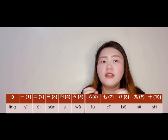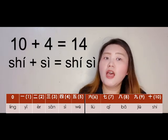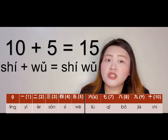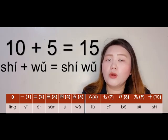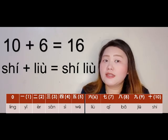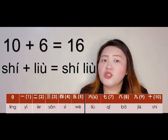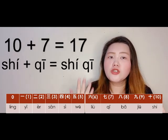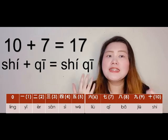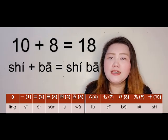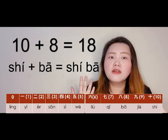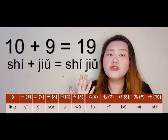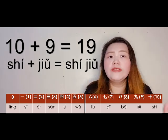Then 10 plus 4 is 14 — 十四 (shísì). Then 15 is 10 plus 5 — 十五 (shíwǔ). Then 16 is 10 plus 6 — 十六 (shíliù). Then 10 plus 7 is 17 — 十七 (shíqī). Then 18 is 10 plus 8 — 十八 (shíbā). Then 10 plus 9 is 19 — 十九 (shíjiǔ).